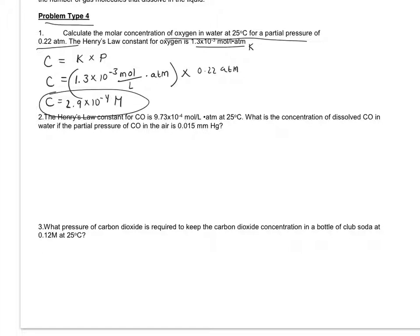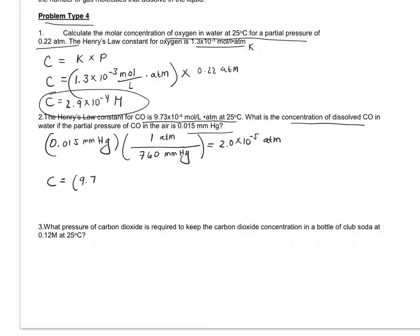In the second problem, our gas is carbon monoxide. We're given K and the temperature. We want to find the concentration given that we're given our pressure, but this time it's in millimeters of mercury. So we need to convert that 0.015 millimeters of mercury to atm. Now we know that there's 760 millimeters of mercury per 1 atm, and this ends up equaling 2.0 times 10 to the negative 5 atm. So now we can solve for by concentration by taking Henry's Law constant and multiplying it by the pressure. So this concentration ends up being 1.9 times 10 to the negative 8 molar.